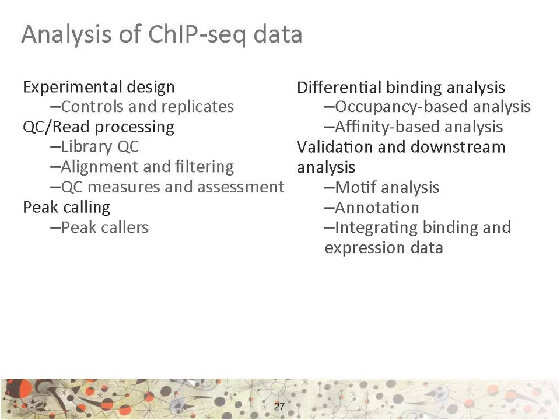Once the peaks have been called, typical downstream analysis involves differential binding analysis. This can be done between different conditions or between a condition and its control. That type of analysis can be occupancy-based — boolean in nature, i.e., is a site bound or not — or, because of the dynamic range property of the ChIP-seq method, affinity-based: is a site differentially bound between different conditions? Once loci of interest have been identified, common follow-up analysis involves motif analysis, binding site annotation, and integration with other types of data. This is particularly relevant in a functional genomics context.